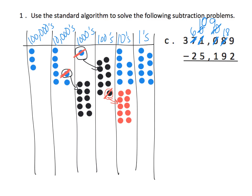We can now finally subtract. Nine take away two is seven. Eighteen take away nine is nine. Nine take away one is eight. Ten take away five is five. Six take away two is four. And three take away nothing is three.